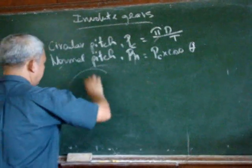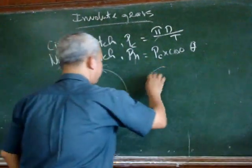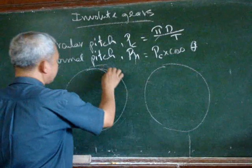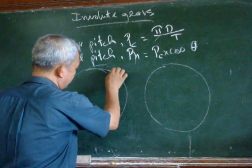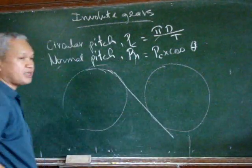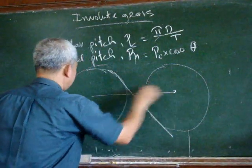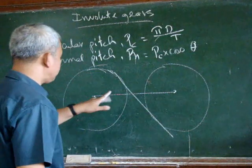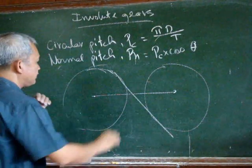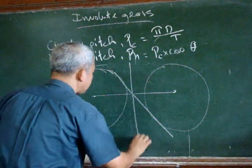Again we can draw these two base circles and let's draw the line of action and the line of centers.